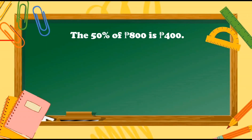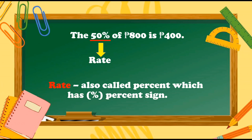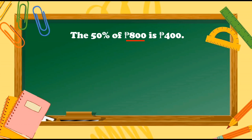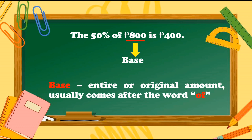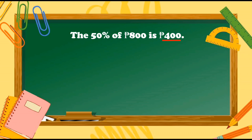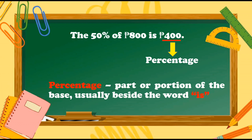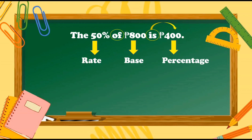From the given statement, 50% is the rate. Rate is also called percent, which has a percent sign. While 800 pesos is the base — the base is the entire or original amount, usually comes after the word 'of.' And finally, we have the percentage. 400 pesos is the percentage. Percentage is a part or portion of the base, usually beside the word 'is.' This statement is also written as: 400 pesos is 50% of 800 pesos. To identify the rate, base, and percentage here, let's take a look.